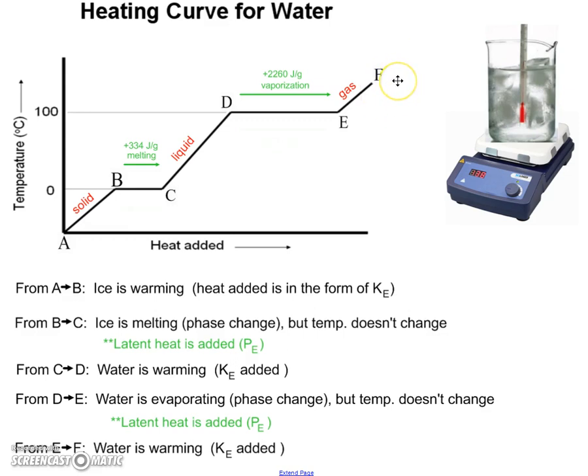Now, if we start with gas and we were to cool it down, we would do the same thing. We would just go towards the left. So the gas would be getting cooler from F to E. From E to D, it would be condensing back into a liquid, releasing all that energy that it gained. Then as a liquid, it's getting colder and colder and colder until it reaches zero degrees, where it starts to freeze. So along this stretch, it's freezing or solidifying. It's releasing all the joules that it absorbed before. And then it will become ice and it will get colder and colder and colder until a certain point.